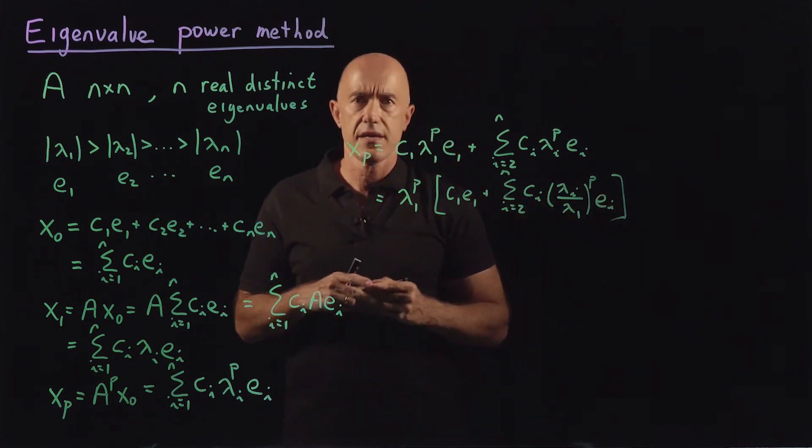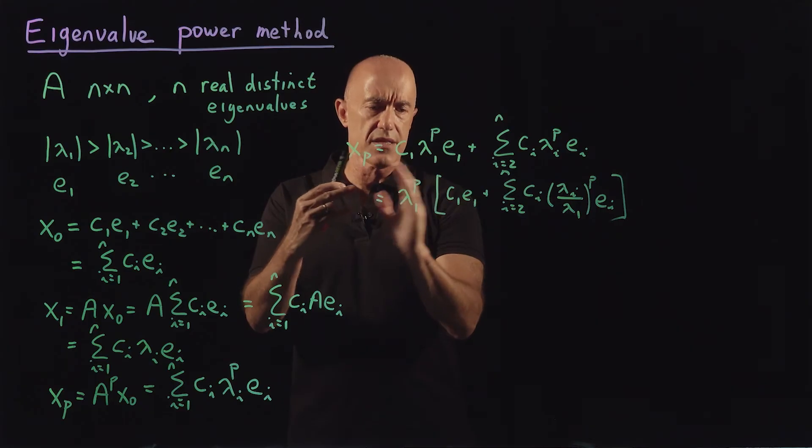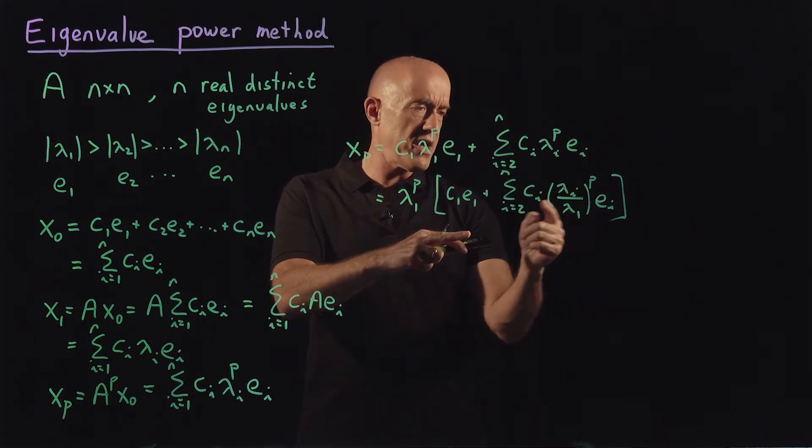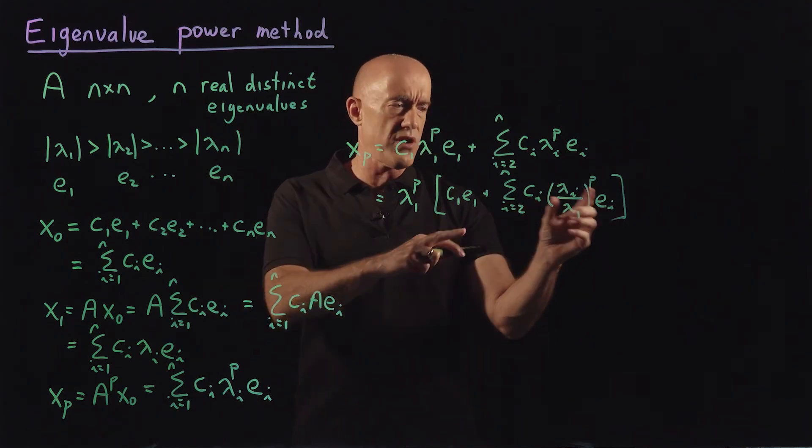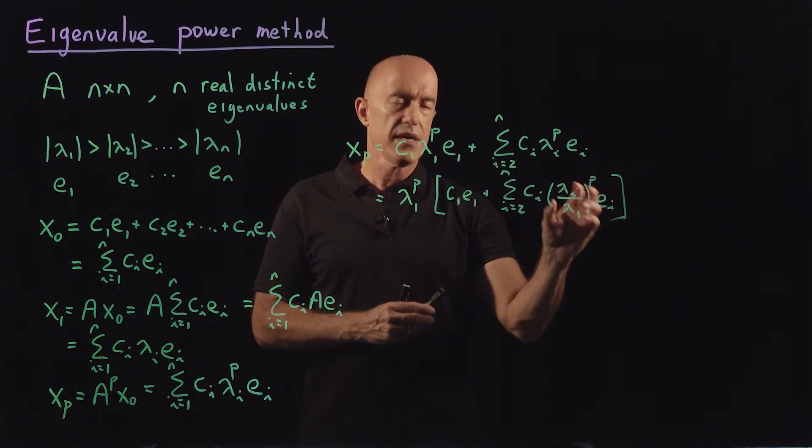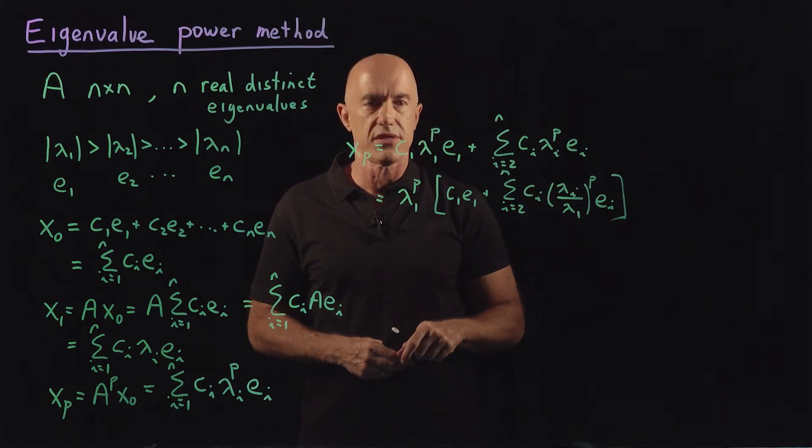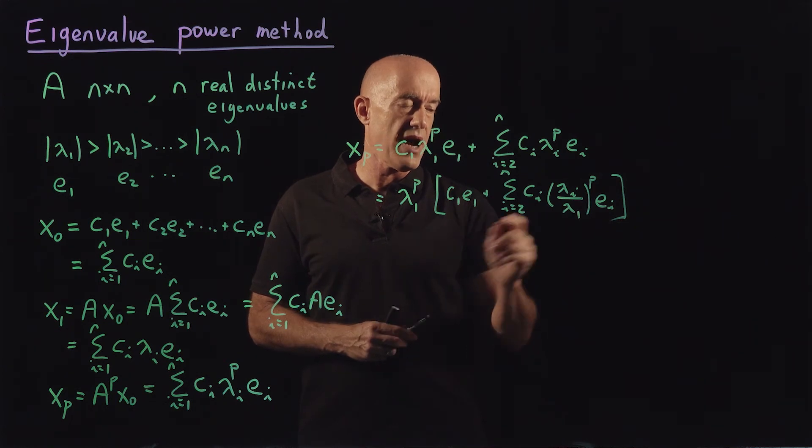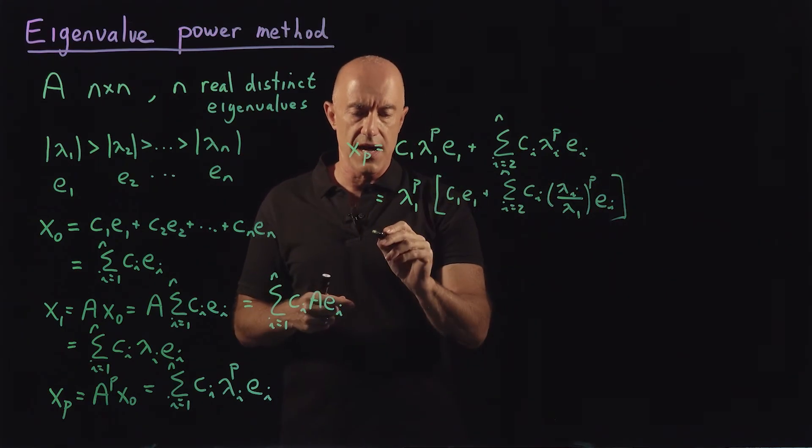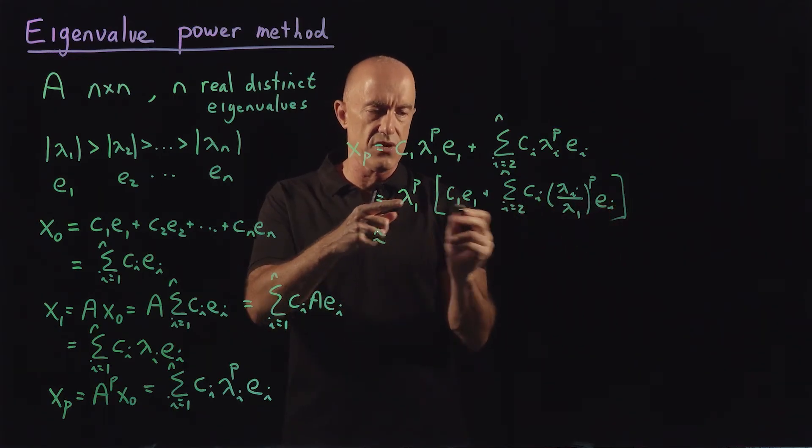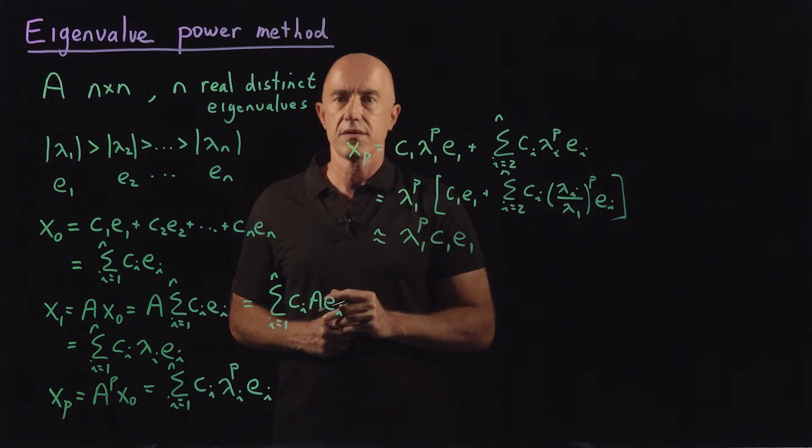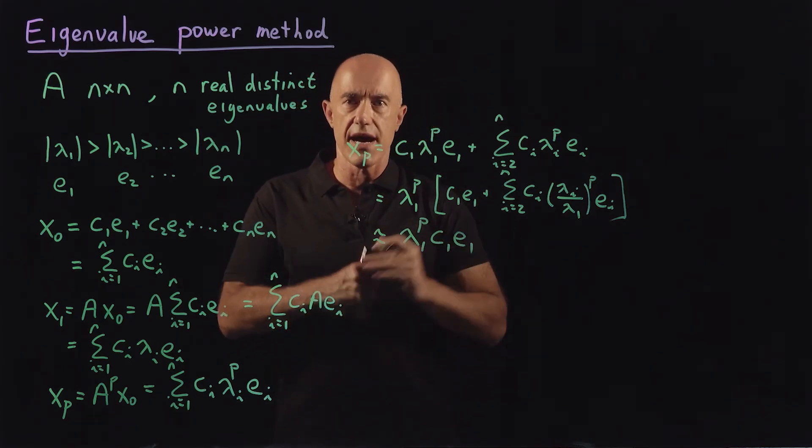So lambda one to the p times c one e one plus the sum from i equals two to n c i lambda i over lambda one raised to the p power times e i. If I write it in this way, it's clear that, disregarding the lambda one to the p piece, if you compare c one e one to each term in this sum, it's clear that the terms in the sum are going towards zero relative to c one e one. Lambda i over lambda one raised to the p power is being driven down to zero because lambda one is the largest in absolute value. So this is being driven to zero. So if you multiply by a enough times, a good approximation to this is just the leading order term, which will be lambda one to the p times c one e one. That's the dominant term. That's why it's called the dominant eigenvalue.